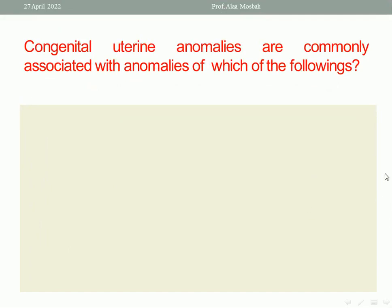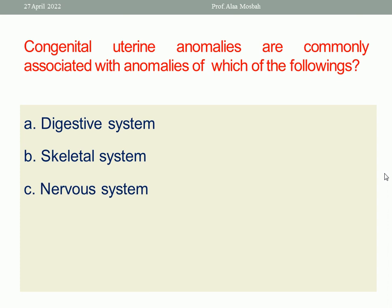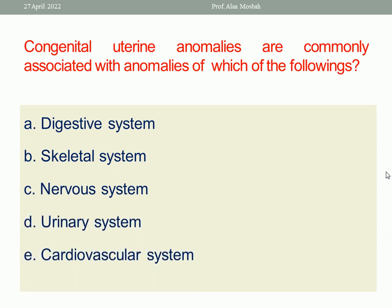Congenital uterine anomalies are commonly associated with anomalies of which of the following? Digestive system, skeletal system, nervous system, urinary system, or cardiovascular system. What is common as regard anomaly with uterine anomaly is the urinary system. So the best response here is urinary system. That is why if you find a case with uterine anomaly, you should investigate for urinary tract, for example by doing IVP to detect any urinary tract anomalies.